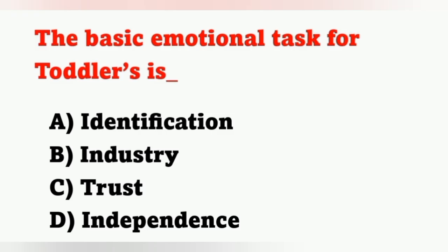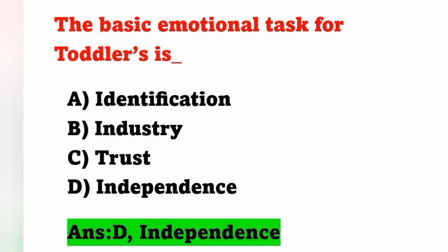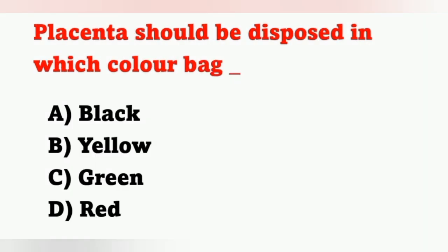Next question: The basic emotional task of a toddler is? Options: A) Identification, B) Industry, C) Trust, D) Independence. The toddler period is 1 to 3 years. The basic emotional task for a toddler is independence. Option D is the correct answer.